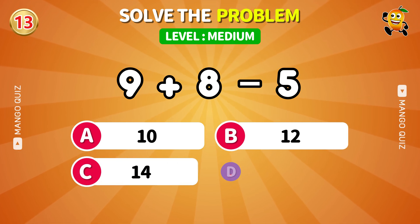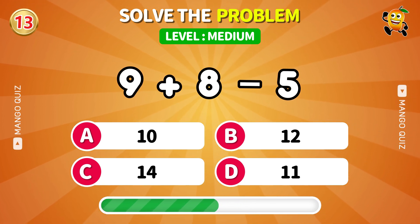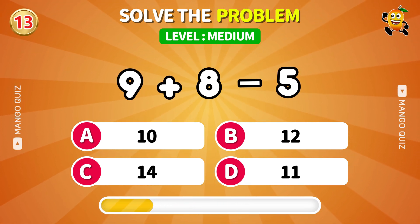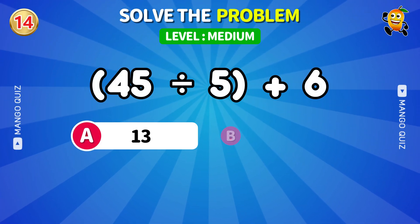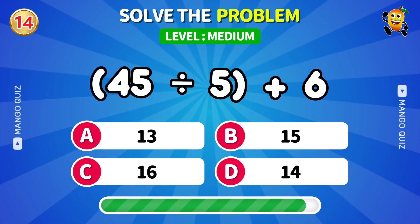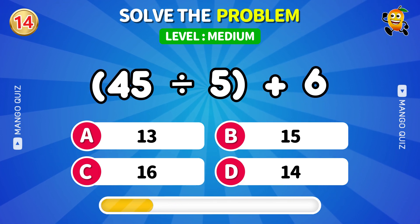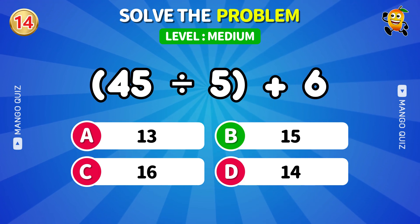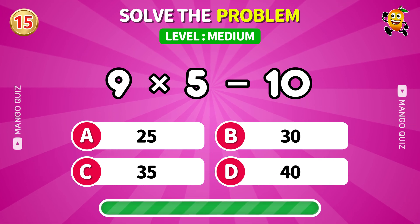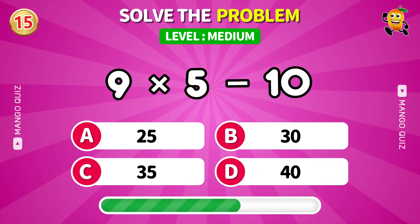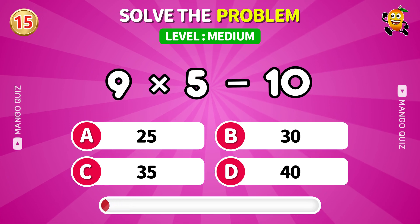9 plus 8 minus 5. Answer: 12. Next: 45 divided by 5 plus 6. Answer: 15. Next: 9 times 5 then minus 10. Answer: 35.